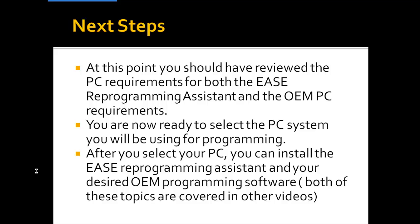That was a quick review of some of the OEM websites. At this point, you should have reviewed the PC requirements for both the EASE Reprogramming Assistant software and the OEM PC requirements. You're now ready to select the PC system that you're going to use for programming vehicle controllers. After you select your PC, you can install the EASE Reprogramming Assistant software and your desired OEM programming software — both topics are covered in other videos. Once the Reprogramming Assistant software is installed, it's a great handy reference for finding all the OEM websites and requirements, not just for PC requirements but for all reprogramming help.